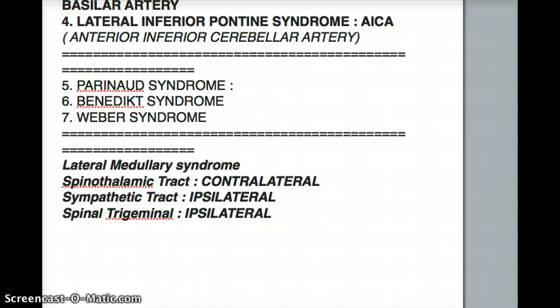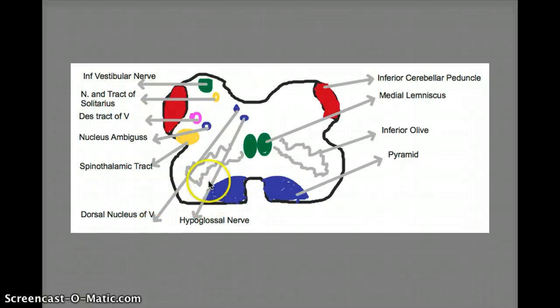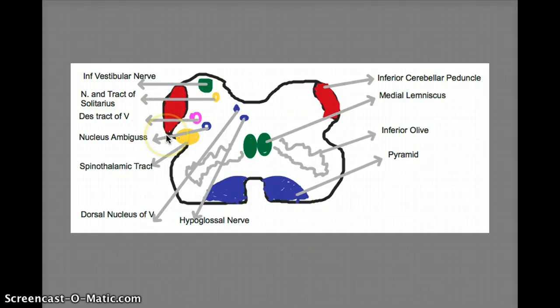The next tract affected is the sympathetic tract. The sympathetic tract does not cross to the other side — its effect is going to be ipsilateral. The spinal trigeminal tract is also going to be ipsilateral. So the sympathetic tract and the spinal trigeminal tract are ipsilateral, while the only contralateral structure in lateral medullary syndrome is the spinothalamic tract.